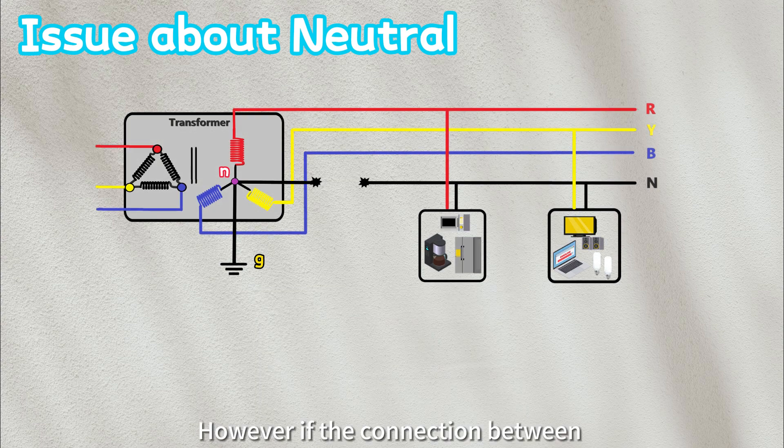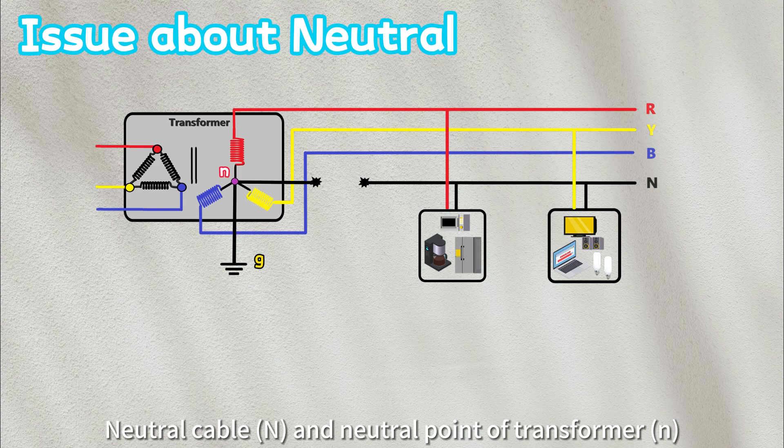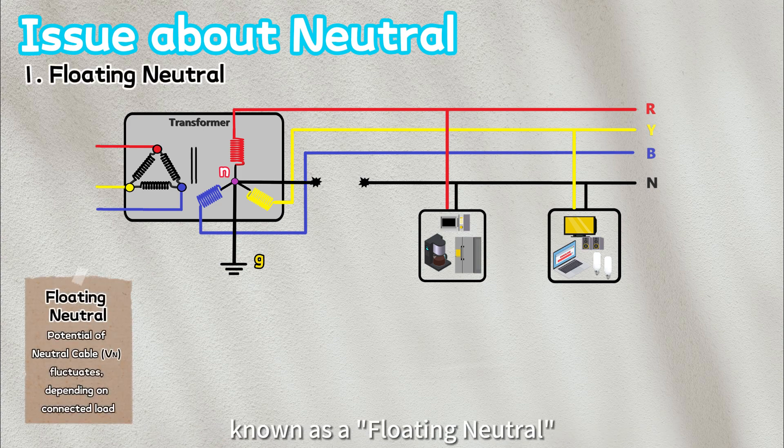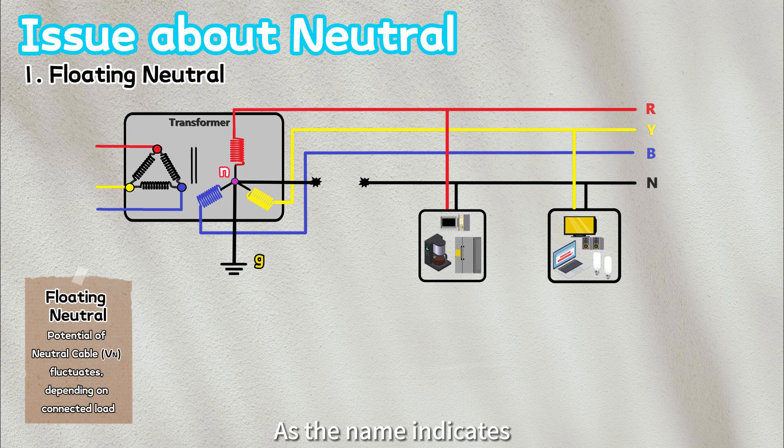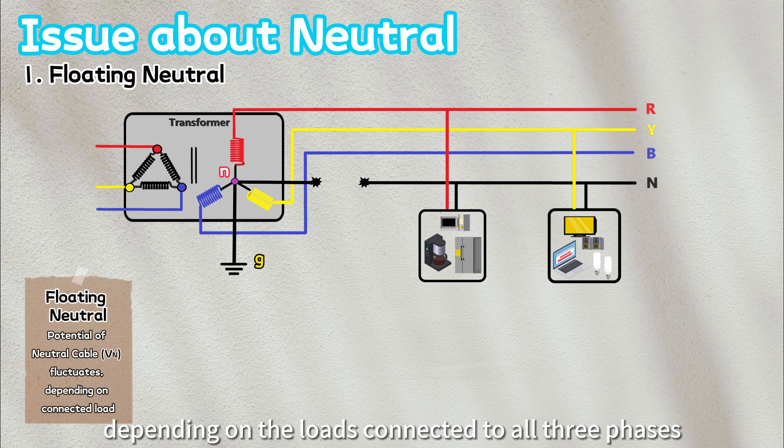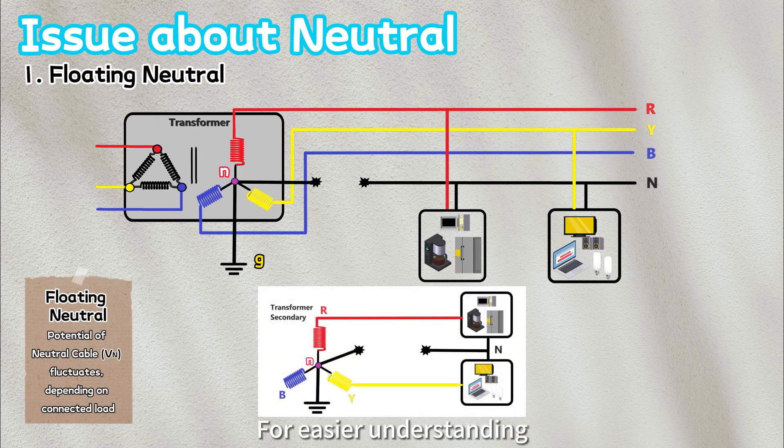However, if the connection between neutral cable and neutral point of transformer is broken, or loosened, it leads to a condition known as a floating neutral. As the name indicates, floating neutral means the potential of the neutral cable will fluctuate, depending on the loads connected to all three phases.